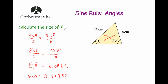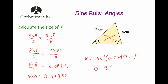In this question I've been asked to work out the size of the angle theta, not the sine of theta. So I'm going to press shift sine, or inverse sine, of 0.57955 and so on, and that will give me the size of angle theta. On my calculator I press shift sine, press answer and equals, and that gives me theta is equal to 35.42 degrees to two decimal places. So the size of this angle theta is 35.42 degrees.